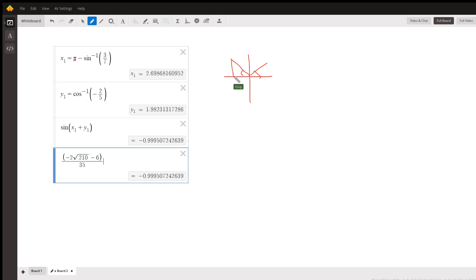So does that one. And so pi minus the inverse sine of, or the angle that has a sine of 3 sevenths, will give us the angle of the second quadrant. y is the inverse cosine of negative 2 fifths. The sine of the sum of those two angles... The Desmos graphing calculator gives me that answer and that matches the exact value that we got.